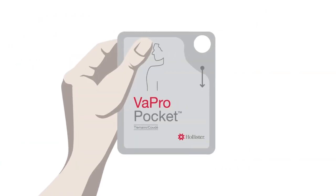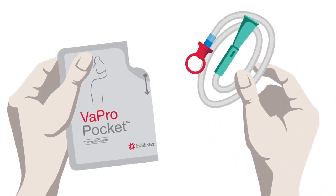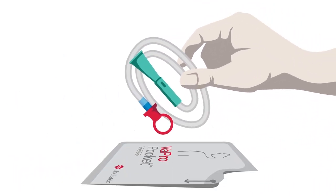After you have washed your hands, you can open the Vapro Pocket Cudé catheter package. This can be done by inserting your thumb in the finger hole or placing your fingers at the top of the strip and tearing down the side of the package. Now that the package is open, you can remove the catheter and place it on the open pack, which is left on a flat surface.